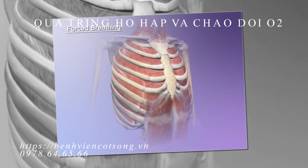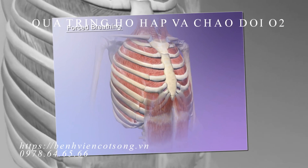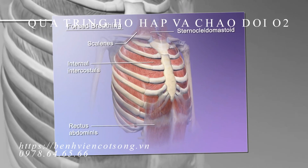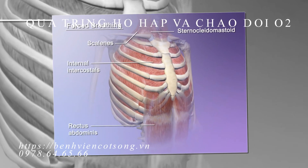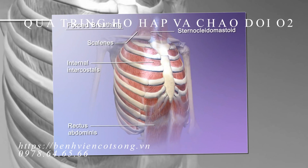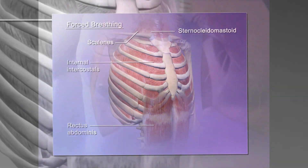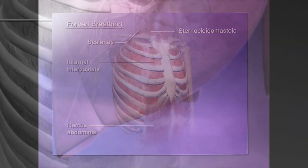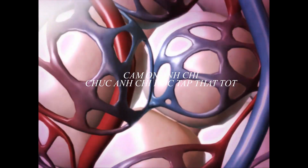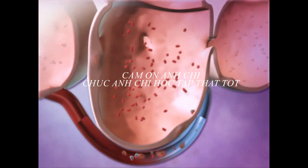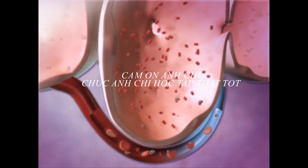The body's demand for more oxygen can change normal breathing to forced breathing. Additional muscles increase the changes in volume of the thoracic cavity so that more air can pass in and out.